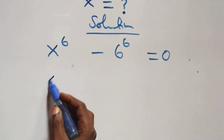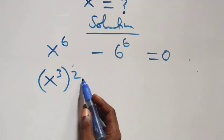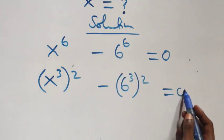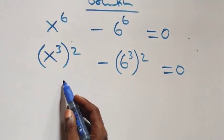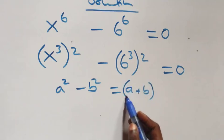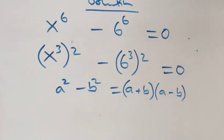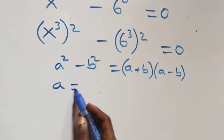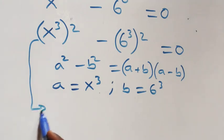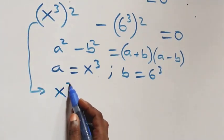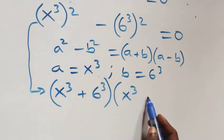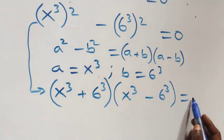We can write this as x raised to power 3, then raised to power 2 — since 2 times 3 gives us 6 — minus 6 raised to power 3, then raised to power 2, equals 0. This follows the difference of two squares: a squared minus b squared equals (a + b)(a - b). Here a is x raised to power 3 and b is 6 raised to power 3, giving us (x^3 + 6^3)(x^3 - 6^3) = 0.